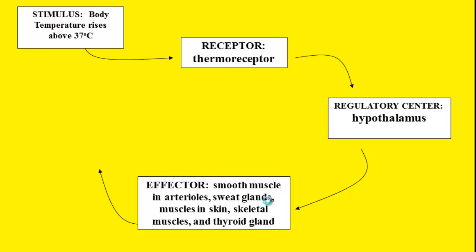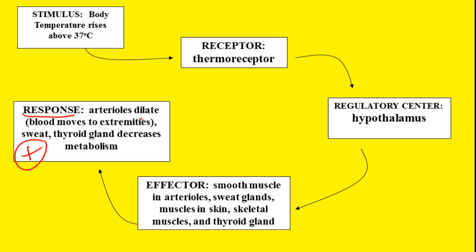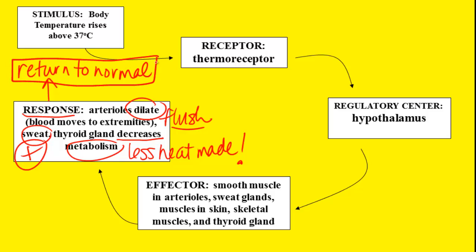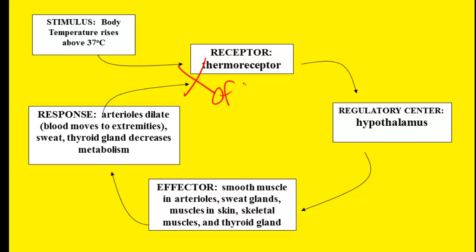All of those effectors affect different changes in the body. Your arterioles will dilate, moving blood to your extremities to get rid of heat in your blood and you'll get all flushed. You'll also sweat, which helps get rid of the heat. Your thyroid gland will decrease your metabolism because high metabolism produces a lot of heat, so lower metabolism means less heat. All of those help cool the body down. As the body cools back to 37 degrees, the thermoreceptor stops sending the message to the hypothalamus, shutting the system down at the set point. We represent that with a negative sign on our cycle.